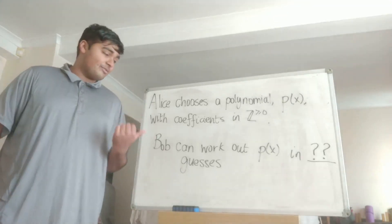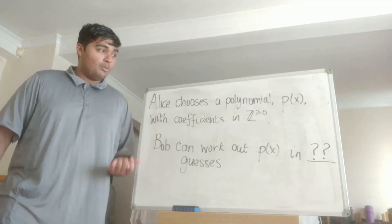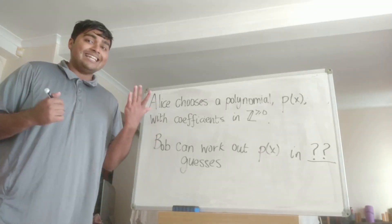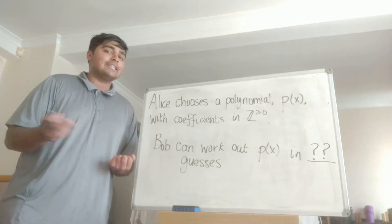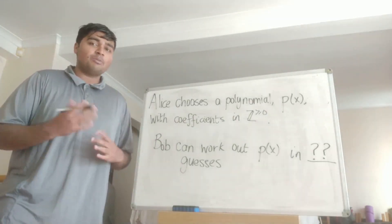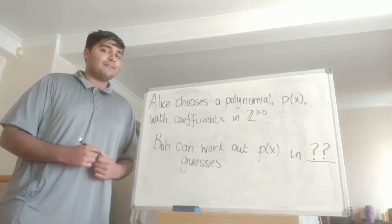Now, Alice keeps this polynomial a secret from Bob and what Bob wants to do is try to work out what P(x) is by asking Alice to plug in certain numbers into P(x), tell Bob the output, and then once Bob has enough information, Bob should then be able to work out what P(x) is.